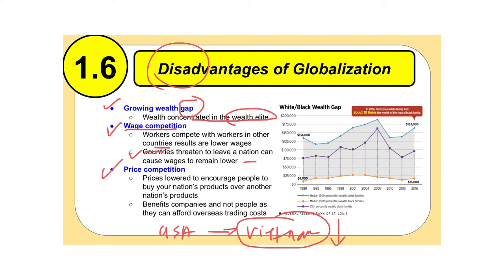Lastly in terms of price competition, prices are lowered to encourage people to buy your nation's products. This is designed to try to get people to buy local, but keep in mind that price competition benefits companies and not the people. Companies can actually afford the trading costs — people cannot. Companies play around with prices and it only benefits them, not really the people.